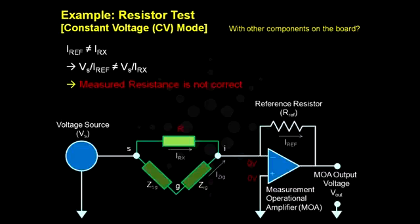Something needs to be done to eliminate I-Zig so that I-Rx becomes equal to I-ref, thus making the calculations for the resistance correct again. The method used is called guarding.